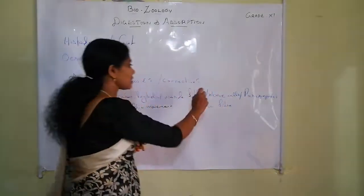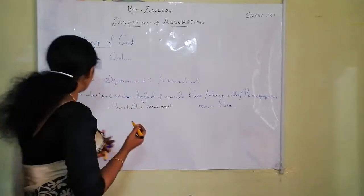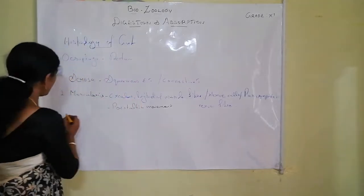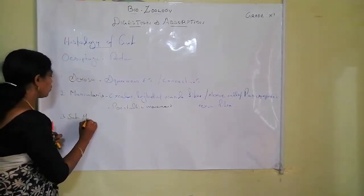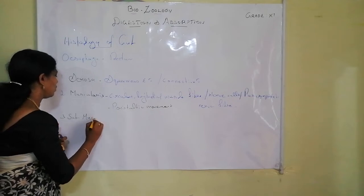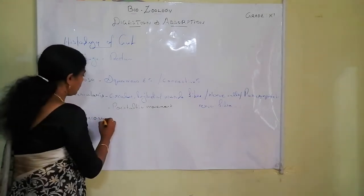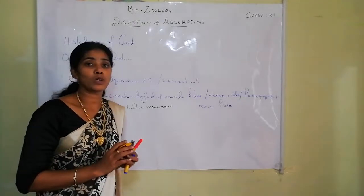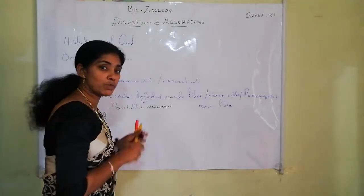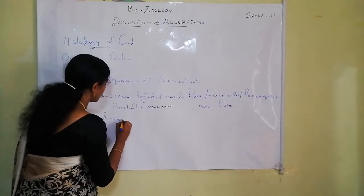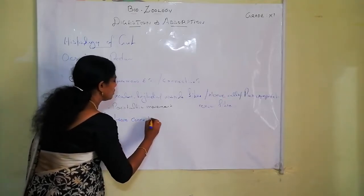This peristaltic movement is controlled by the parasympathetic nervous system. The third layer is the submucosal layer. This submucosal layer consists of loose connective tissue.